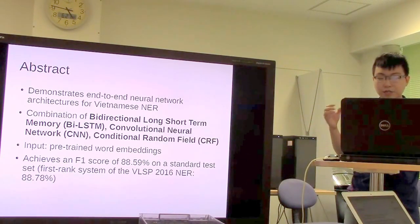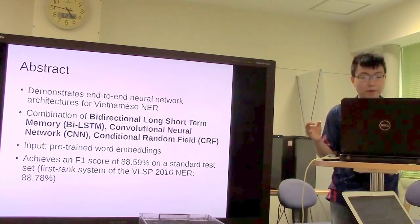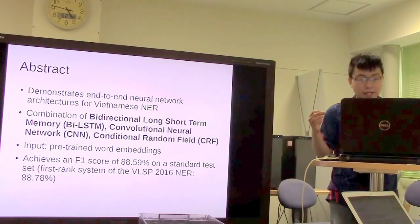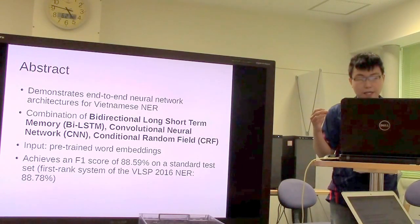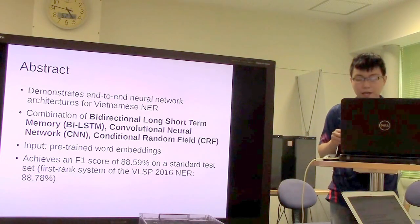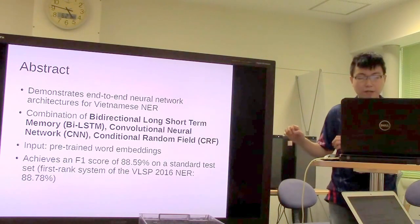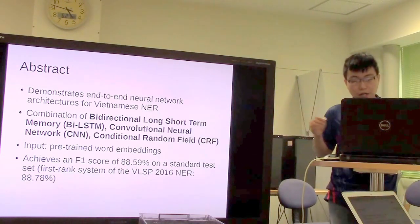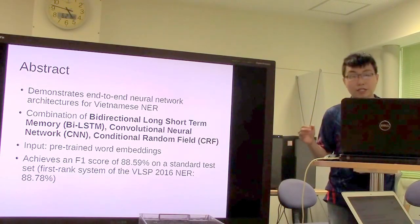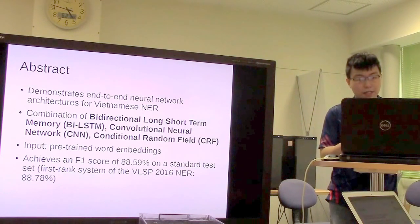The input is pre-trained word embeddings. This system achieves an F1 score of 88.59% on the standard test set. The first-rank system of the VLSP 2016 Named Entity Recognition campaign achieved 88.78%.